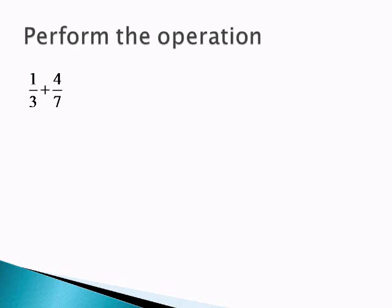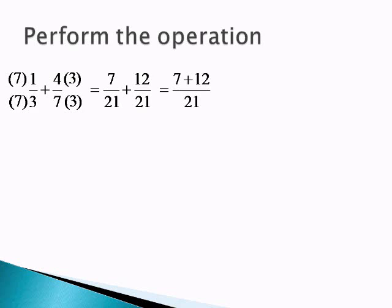You might remember that to add fractions, we need a common denominator. Inspecting the denominators 3 and 7, you'll notice the common denominator is 21. So we multiply 3 by 7 and 7 by 3, doing the same thing to the top and bottom. Now the problem reads 7 over 21 plus 12 over 21. And you remember with adding fractions, we add the numerators, keep that common denominator, and 19 over 21 is the final answer.